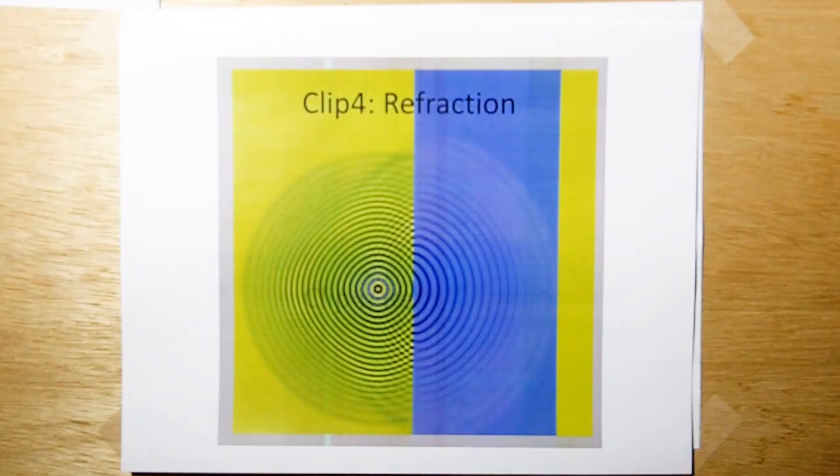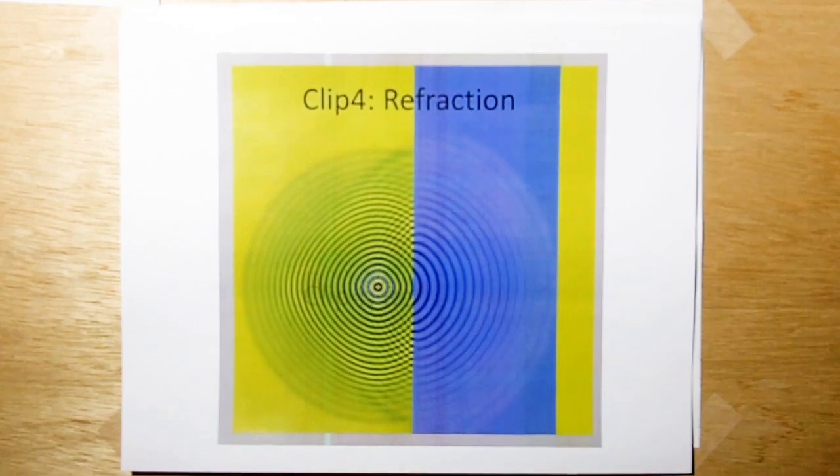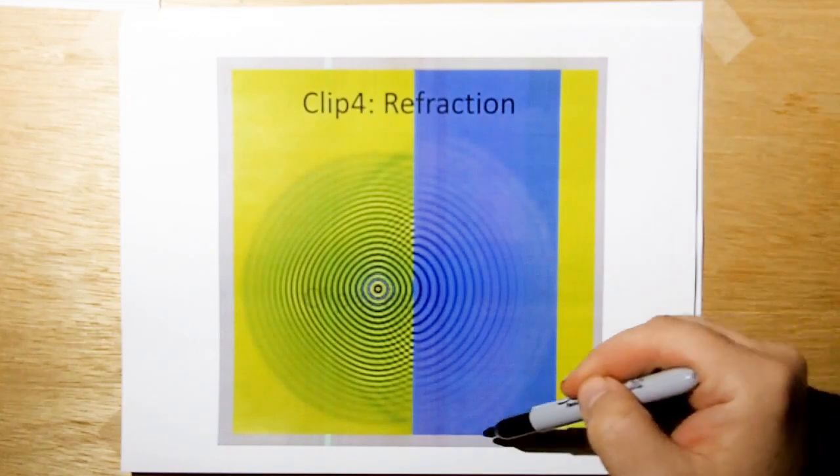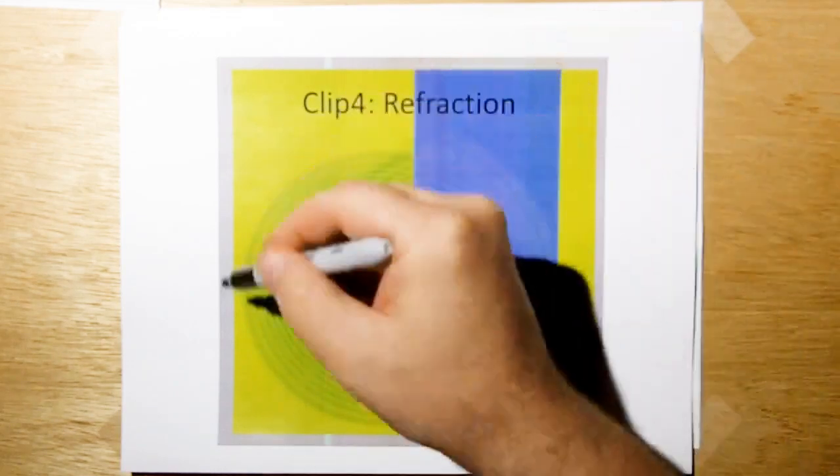The next one is clip 4, which is refraction, which was just something I tried, and it worked out pretty nice. This blue area here is an area that's got a different impedance than this area over here.